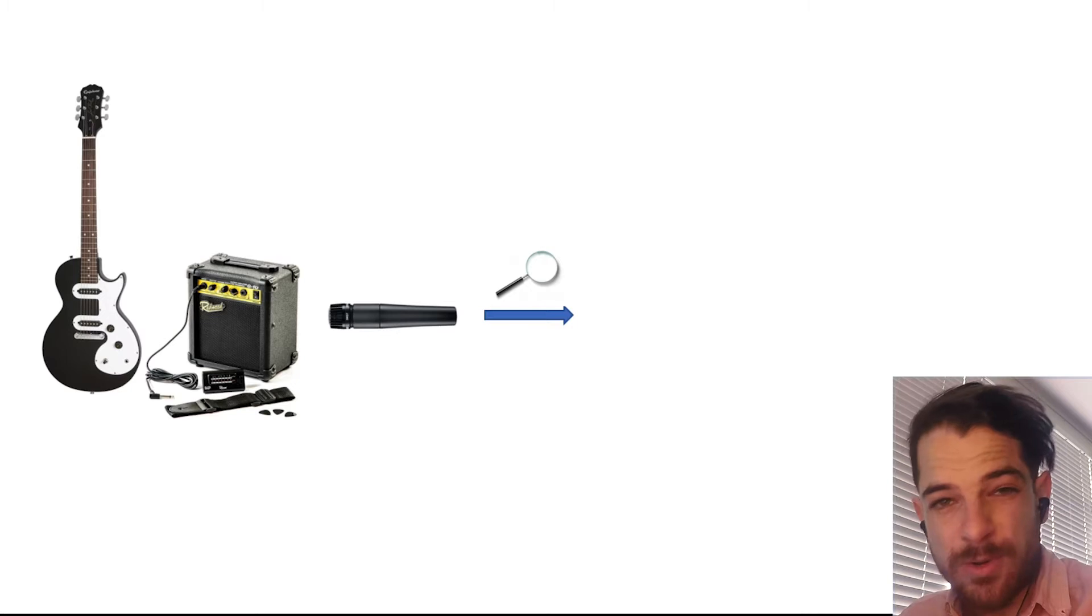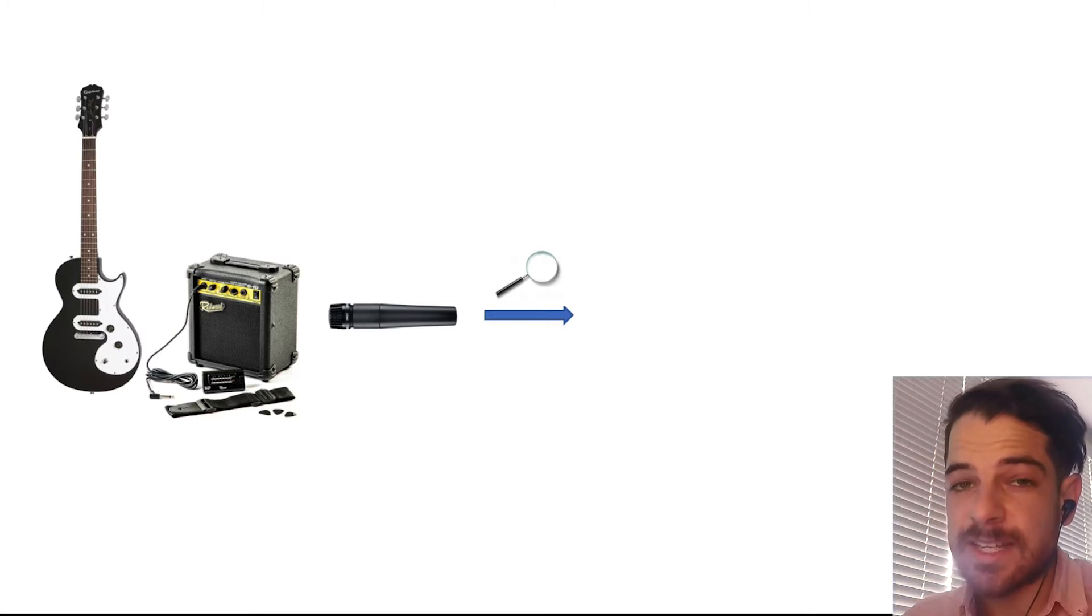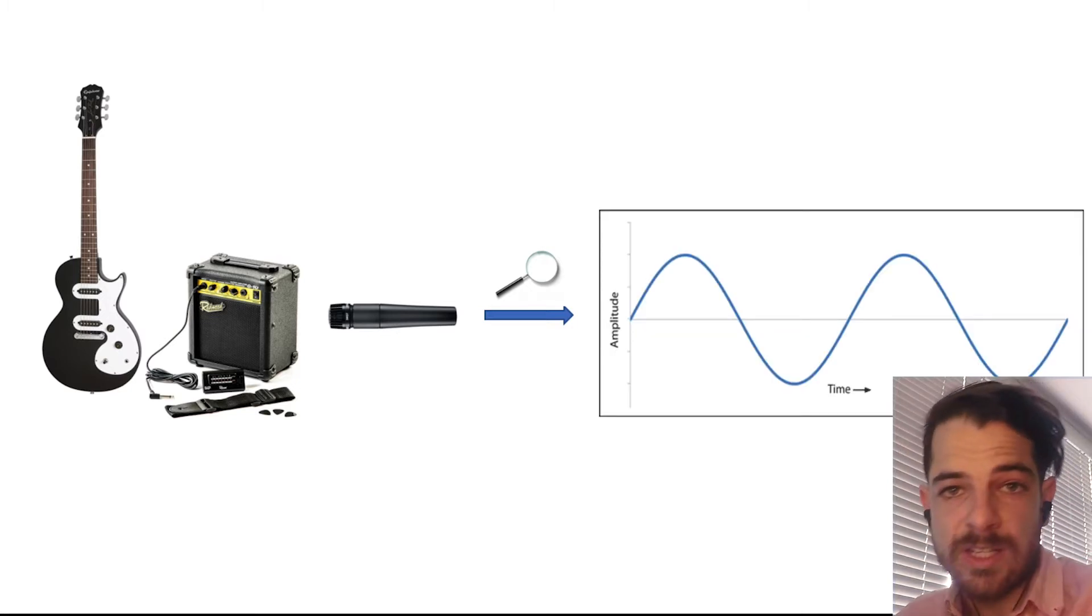So imagine I've got my guitar here and it's amped up. I get my microphone and start recording it. If I were to zoom in super close to the signal that I end up getting, it'd look something like this. This is a sine wave for all you mathematics nerds out there.